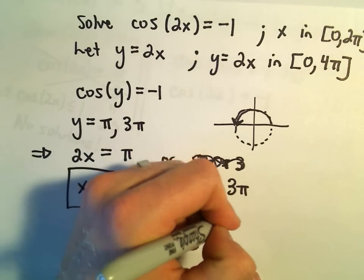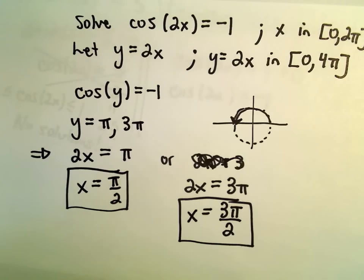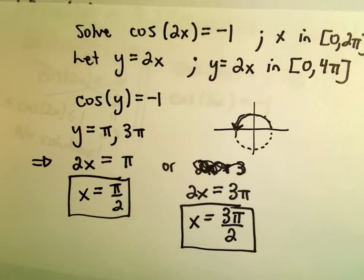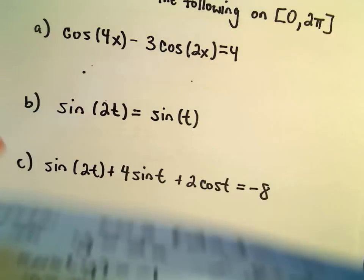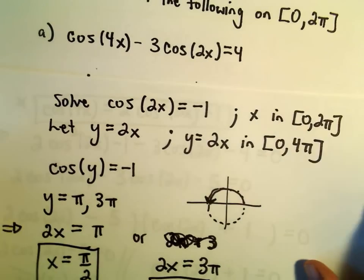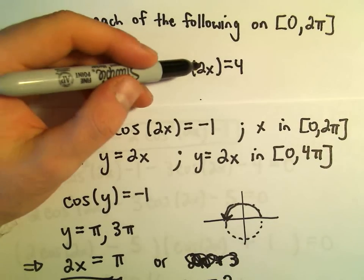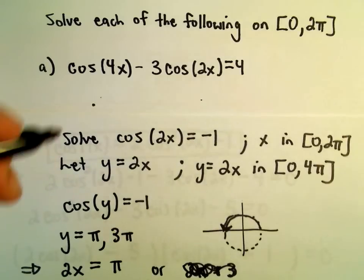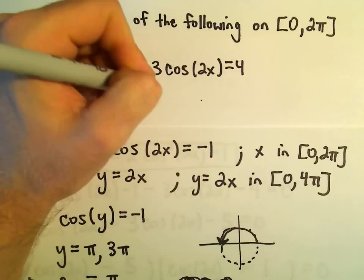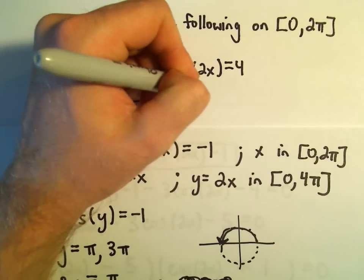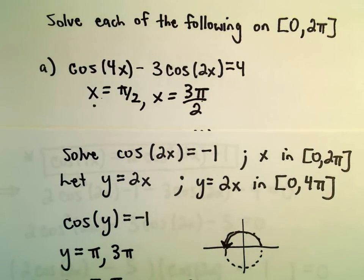And those are going to be our two solutions to this very original equation. So it says the solutions to cosine of 4x minus 3 cosine of 2x equals 4. Our two solutions are going to be x equals pi over 2 and x equals 3 pi over 2. Those will be the only two solutions in the interval 0 to 2 pi.